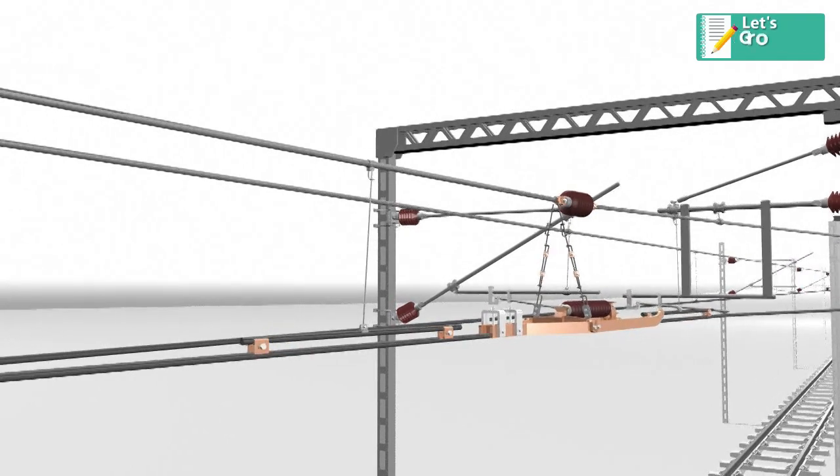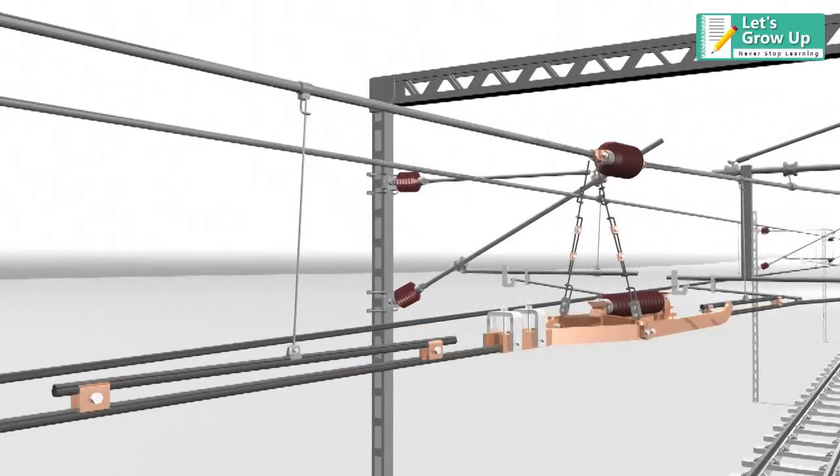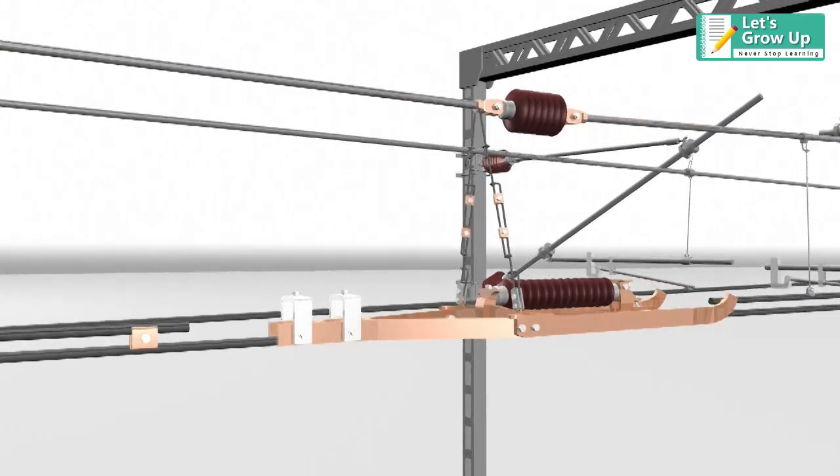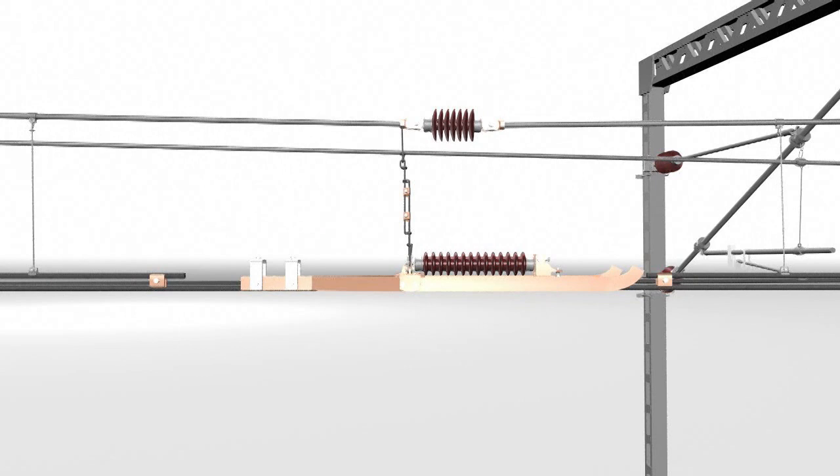The weight of the section insulator should be fully taken up by the droppers so that the balance of the runners are the same height and the adjacent contact wires help runners to maintain equal positions.